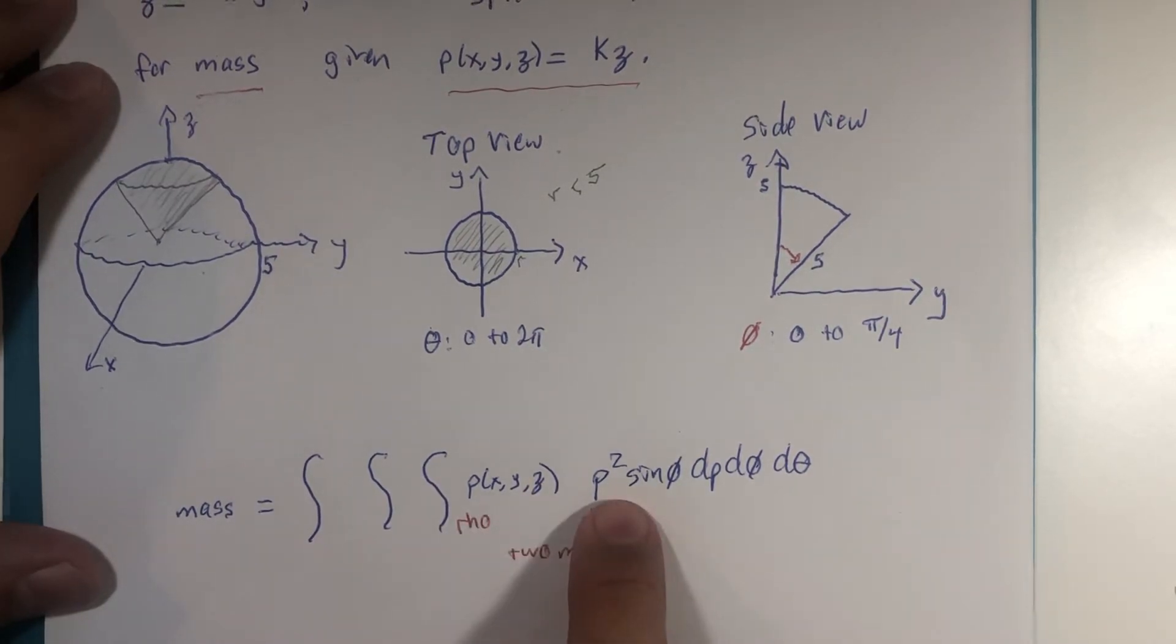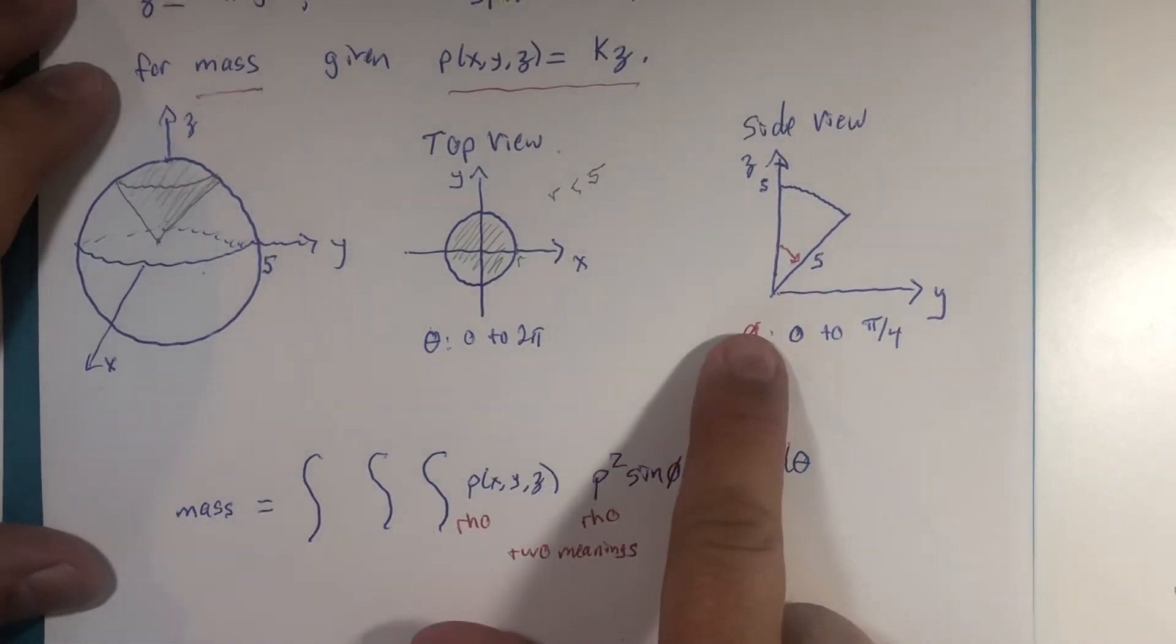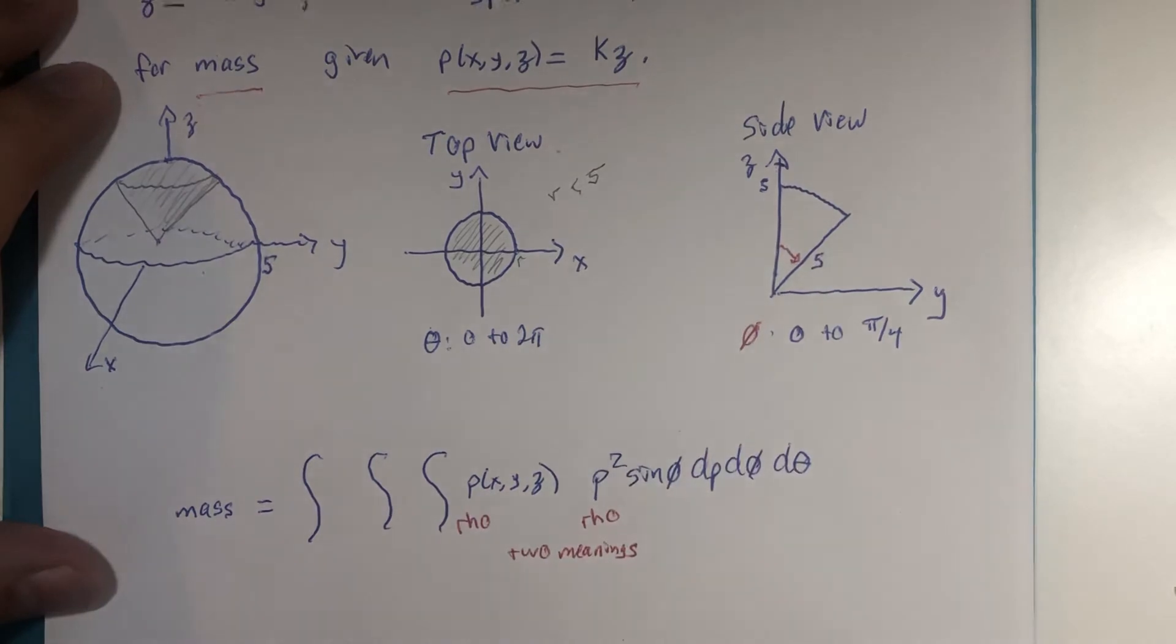In the one case, it is our density. In this case, it is the radius from the origin to the outside part of the graph. We're just going to have to come to terms with the fact that that's going to happen sometimes, where symbols get used differently, especially between math and sciences. They get reused for different purposes.